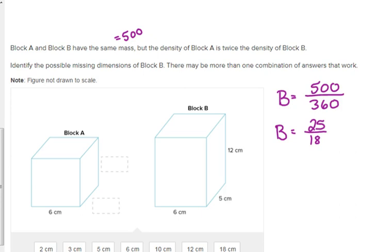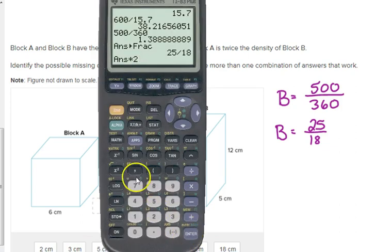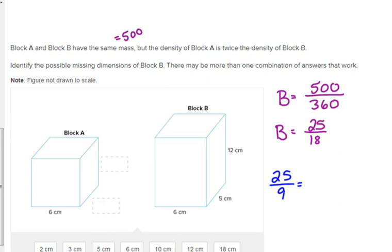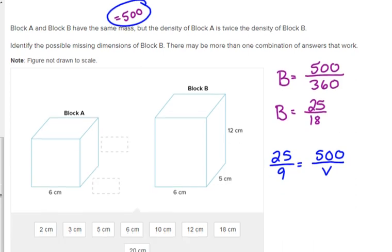So let's go back to the problem. It says the density of block A is twice the density of block B. We just found the density of block B. So block A is twice that. So let's multiply it by 2. 25 over 9. Let's change colors. 25 over 9 is the density for block A. We know its mass, technically. We made up one. Its mass is 500. We don't know its volume. We're missing some dimensions of its volume. So let's find out what its total volume should be.